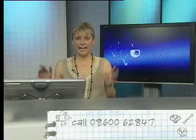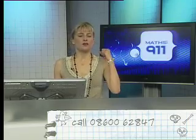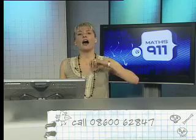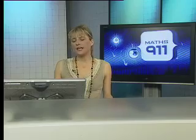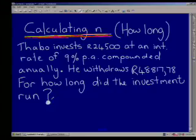When we are calculating N, N is our time period. It is always a dead giveaway if the question says 'how long' — for example, you put a certain amount in the bank, how long before you draw out twice as much? Whenever we see the keywords 'how long,' we must know they are asking us to calculate N. Let's have a look at the question — it's relatively simple, but I just want to show you the principle around calculating N.